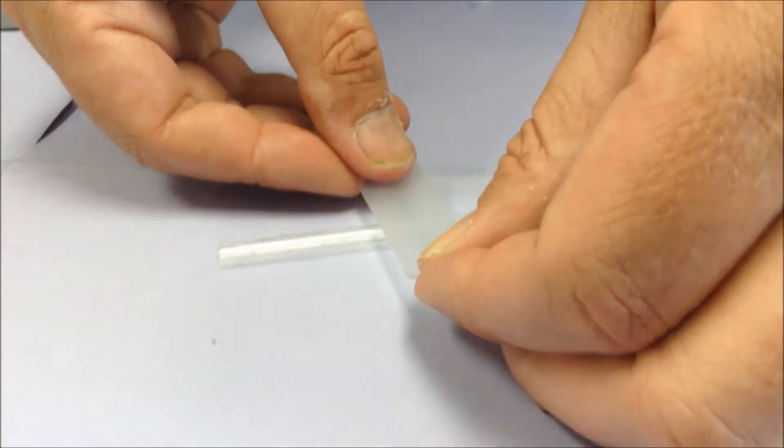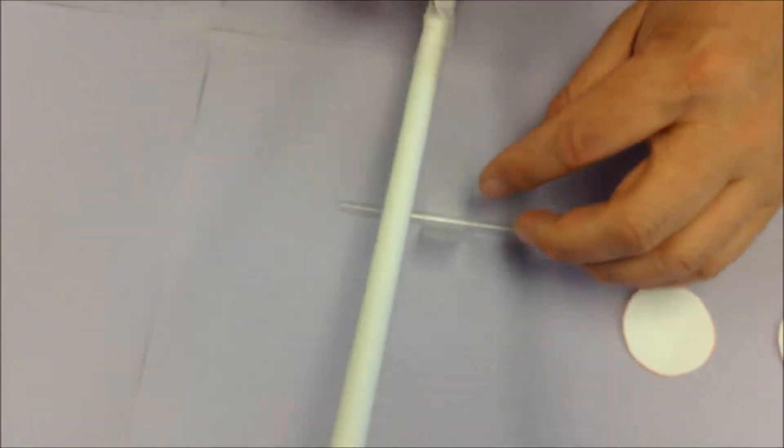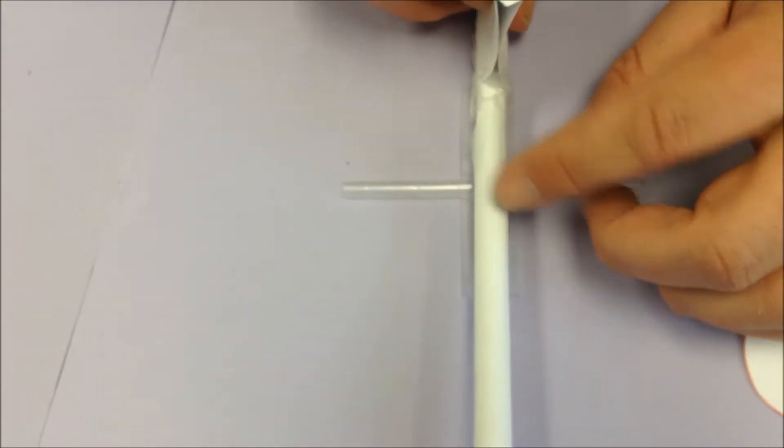Today we're going to look at attaching the straw axles to the body tube. What I like to do is put the straw down on the table and then put a piece of tape on it perpendicular to the straw itself, and then carefully place the body tube onto the tape.